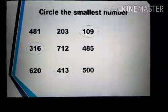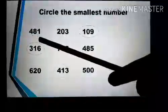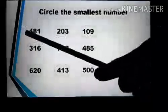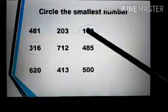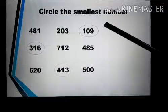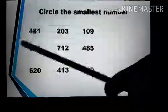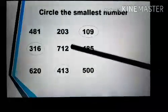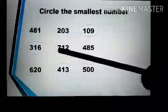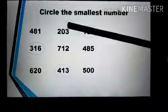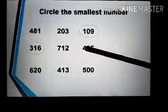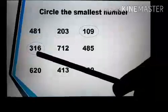Circle the smallest number. The first example is 481, 203, and 109. We compare the first digit: 4, 2, and 1. 1 is smaller than 2 and 4, so 109 is the smallest number. Next we have 316, 712, and 485. Compare the first digit: 3, 7, and 4. 3 is smaller than 7 and 4, so the number 316 is the smallest number.